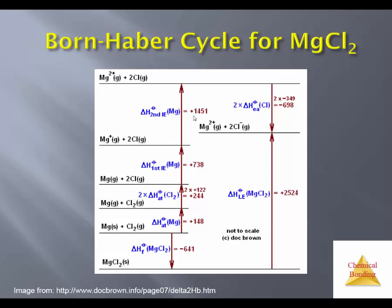Let's look at one here. This is a Born-Haber cycle for magnesium chloride, in which magnesium ions have a 2+ charge. If you started with solid magnesium metal, you'd have to evaporate it. You'd also need to break the bonds in a mole of chlorine molecules — breaking that mole of Cl₂ into two moles of chlorine atoms in the gas phase, because one mole of MgCl₂ has two moles of chloride ions within it. Then you'd have to ionize that magnesium not just once to Mg⁺, but twice all the way to Mg²⁺. So there are two ionization-related steps: the first and second ionization energies. There's also the step for adding a single electron to each chlorine atom within two moles of chlorine atoms.